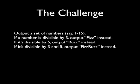The challenge is very simple. You output a set of numbers, say 1 to 15. If a number is divisible by 3, you output fizz instead. If it's divisible by 5, you output buzz, and if it's divisible by both 3 and 5, you output fizz buzz.